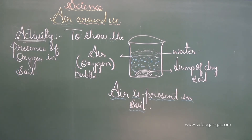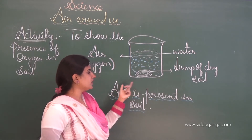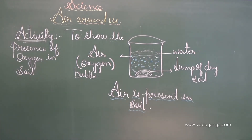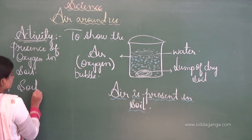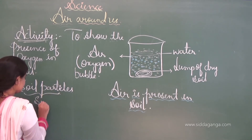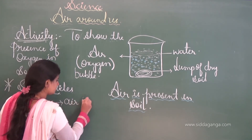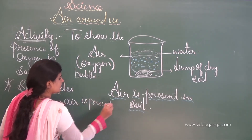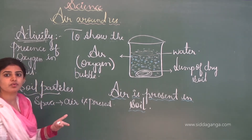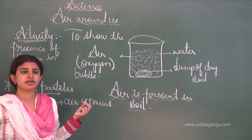The materials required for this activity are: a glass jar or container, a lump of dry soil, and water. The space between soil particles contains air. When water is added, it pushes the air out of those spaces, and air bubbles appear — the air escapes from the soil in the form of bubbles.